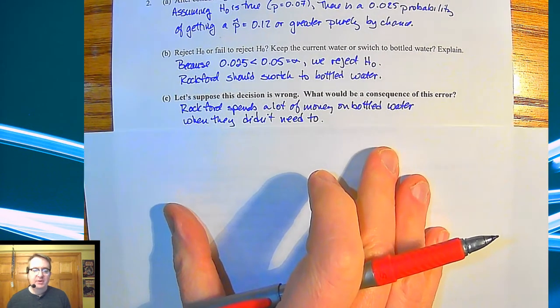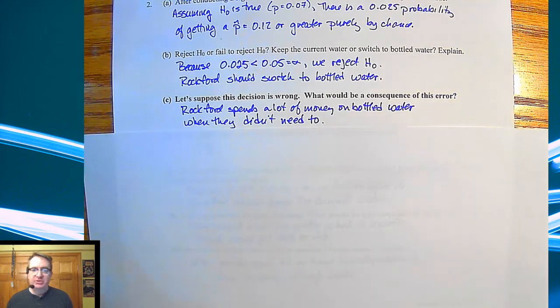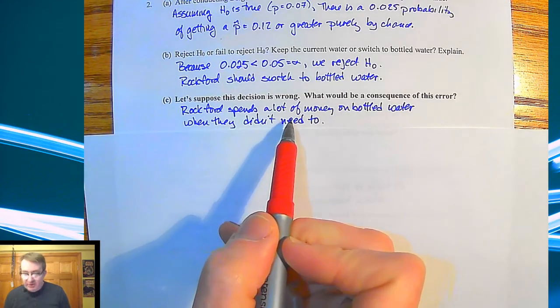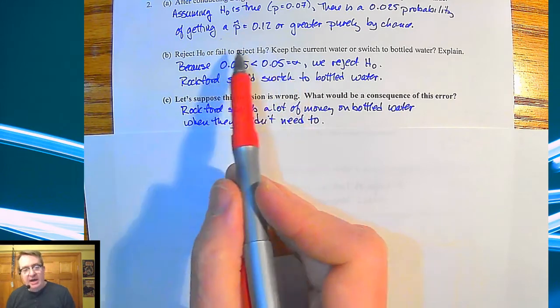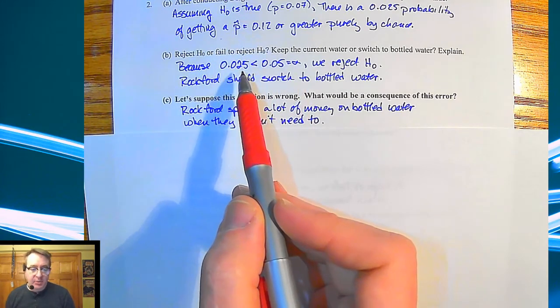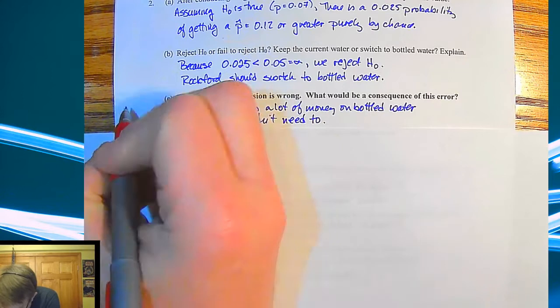So what happens if the decision's wrong? What's going on? So the person who's testing this just happened to grab 12 households that had probably un-polluted water. If you went higher, he or she went higher, maybe they would find all water is fine. So what ends up happening here is Rockford spends a lot of money on bottled water when they didn't need to, because this is saying it's unsafe, but in reality, it was safe. And that, as I said, is called a type 1 error.